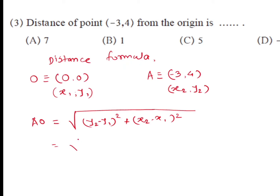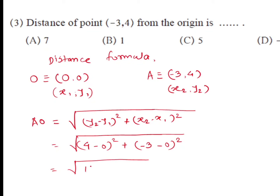Substituting: AO = √[(4 − 0)² + (−3 − 0)²] = √[4² + (−3)²] = √[16 + 9] = √25 = 5. So the distance of the point (−3, 4) from the origin is 5, which is given at option C. So option C is the correct alternative.